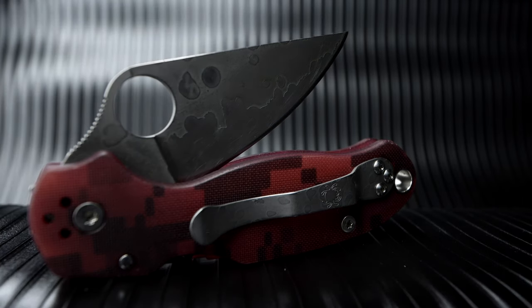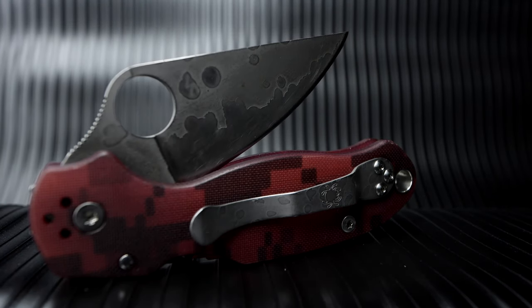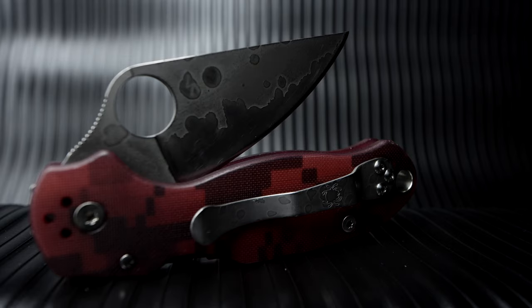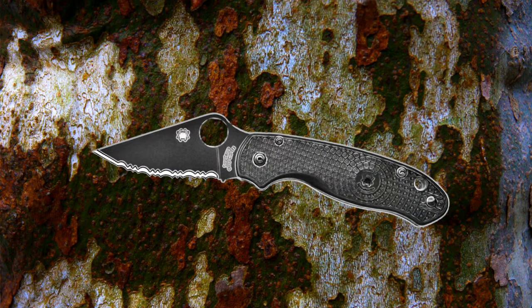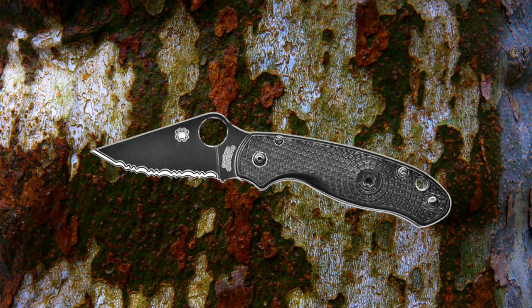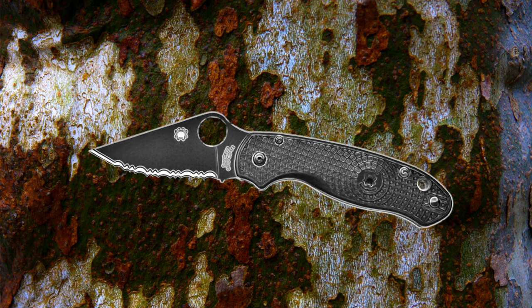The variant I sent to you, Dre, is the Para 3 lightweight serrated edge with a smaller blade thickness at 0.14 of an inch, a larger handle thickness at 0.46 of an inch, and a change in scale material from G10 to FRN.